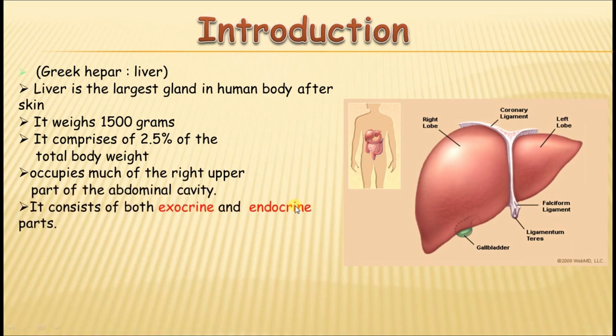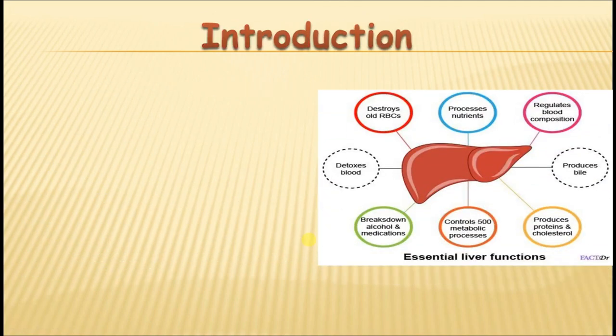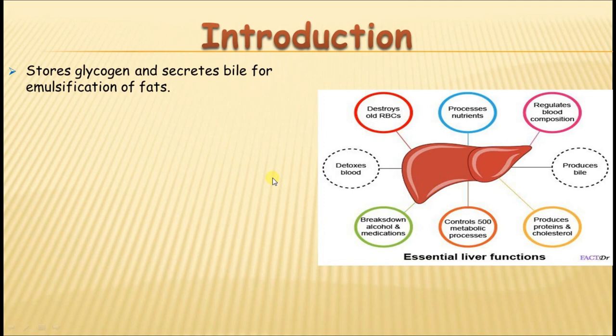The liver has both exocrine and endocrine functions. Its main exocrine function is secreting bile for the emulsification of fat. It also has many metabolic activities, storing glucose in the form of glycogen, and secretes bile through the biliary ductal passages.